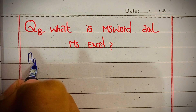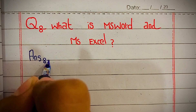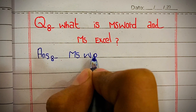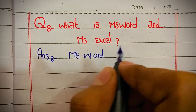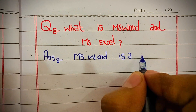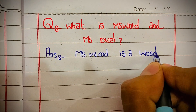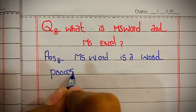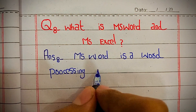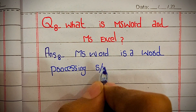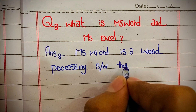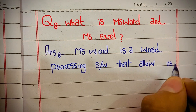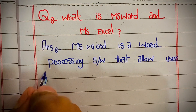Hello guys, welcome back to my channel. In this video we are going to learn the definition of MS Word. MS Word is a word processing software that allows users to create and edit text documents.